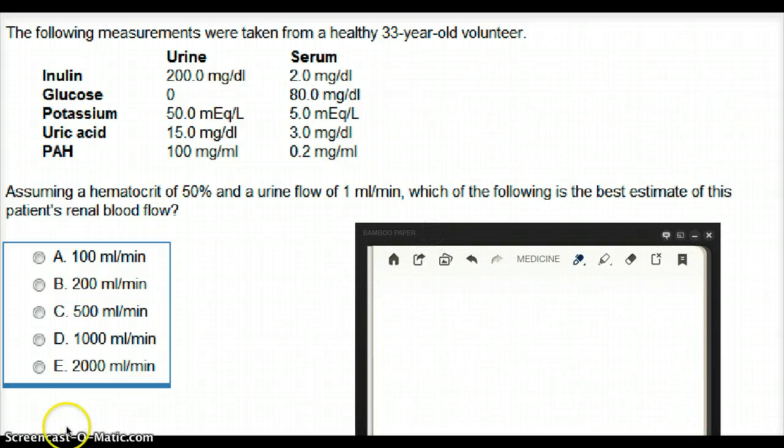Now, what is the question saying? The question is saying that assuming a hematocrit of 50% and a urine flow of 1 ml per minute, which of the following is the best estimate of this patient's renal blood flow?